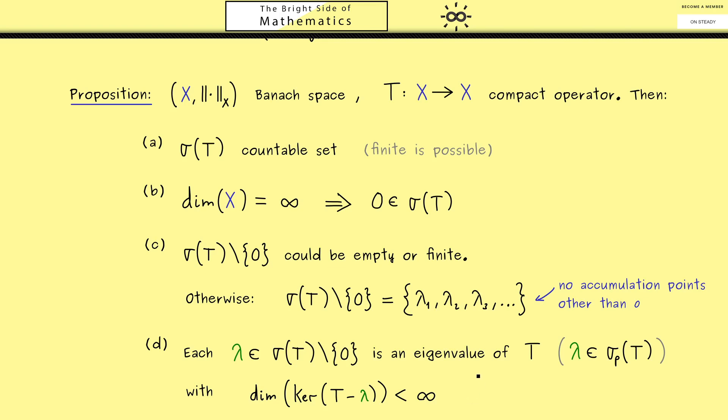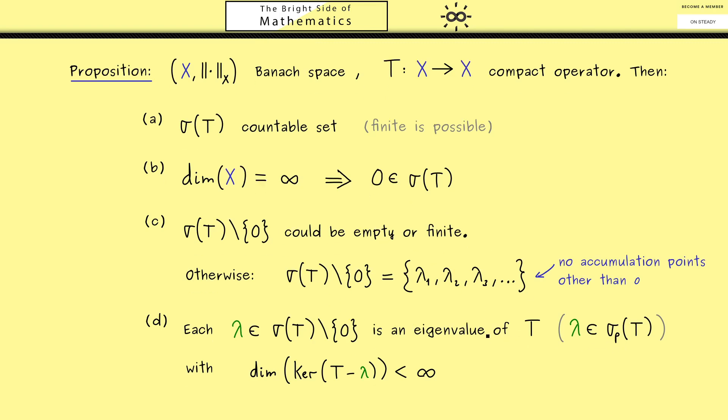So in this regard you see the spectrum here is very similar to the spectrum of a matrix. However of course we could have infinitely many eigenvalues and eigenspaces. And on the other hand it could happen that 0 is an eigenvalue with an eigenspace that is infinite dimensional. But of course it could also happen that 0 is not in the point spectrum at all.